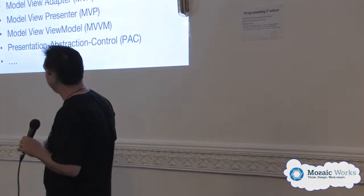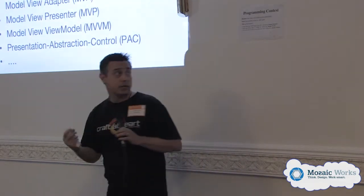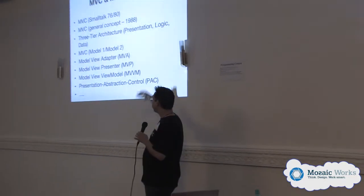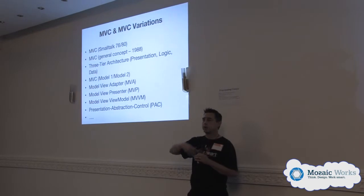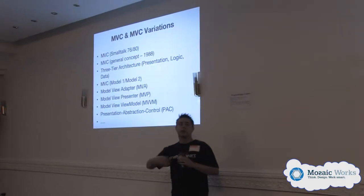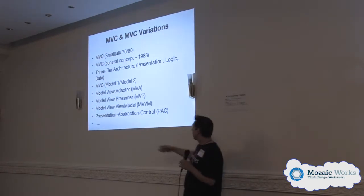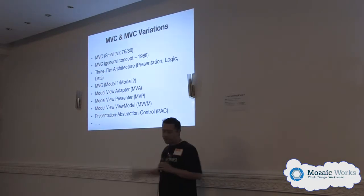I'm going to explain my thought process that led me to where I am today, and hopefully you can take from there and make it better. So I'm going to start with MVC. MVC started in Smalltalk in the 70s, became popular in 1998, and after that became a general concept. There are many variants: for those who work with Java and started in the 90s, you have Model 1 and Model 2 with servlets and JSPs, and loads of other variations like MVA, MVP, MVVM, PAC, and all sorts of stuff.